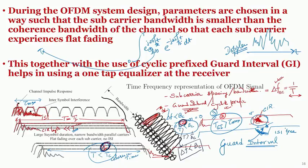The subcarrier spacing should be less than the coherence bandwidth, meaning each subcarrier experiences flat fading. This subcarrier width should be less than the coherence bandwidth. We will understand coherence bandwidth later, but briefly, a channel impulse response causes fluctuation in frequency resulting in frequency selective fading. The third parameter is the guard interval, which must be greater than tau_max — the maximum excess delay of the channel, i.e., the maximum length of the channel impulse response.